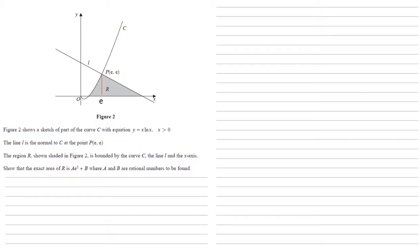So to find that, we're going to find the gradient of L by first finding the gradient of C. So C is equal to y equals x ln x. We're going to differentiate that to find the gradient. So by the product rule, we get 1 times ln x plus x times 1 over x, which is equal to ln x plus 1.